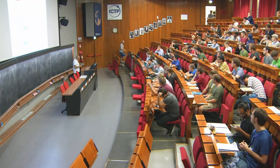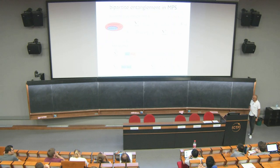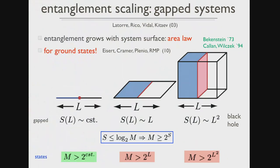Welcome back after lunch. We had derived that the maximum amount of entanglement that you can store in a matrix product state is logarithmically limited by the dimension of the matrix. This will set the course for what we can do, because there is one statement about how much entanglement there is actually in a physical system. In one sentence: the entanglement grows with the system surface. This is what you call an area law.